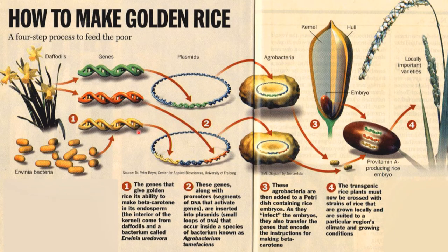The genes involved in the synthesis of beta-carotene from both daffodil and Erwinia bacterium were transferred to a plasmid. These plasmids are then transferred to the bacterium Agrobacterium tumefaciens. This Agrobacterium tumefaciens will infect the endosperm of rice which is present in the petri dish.